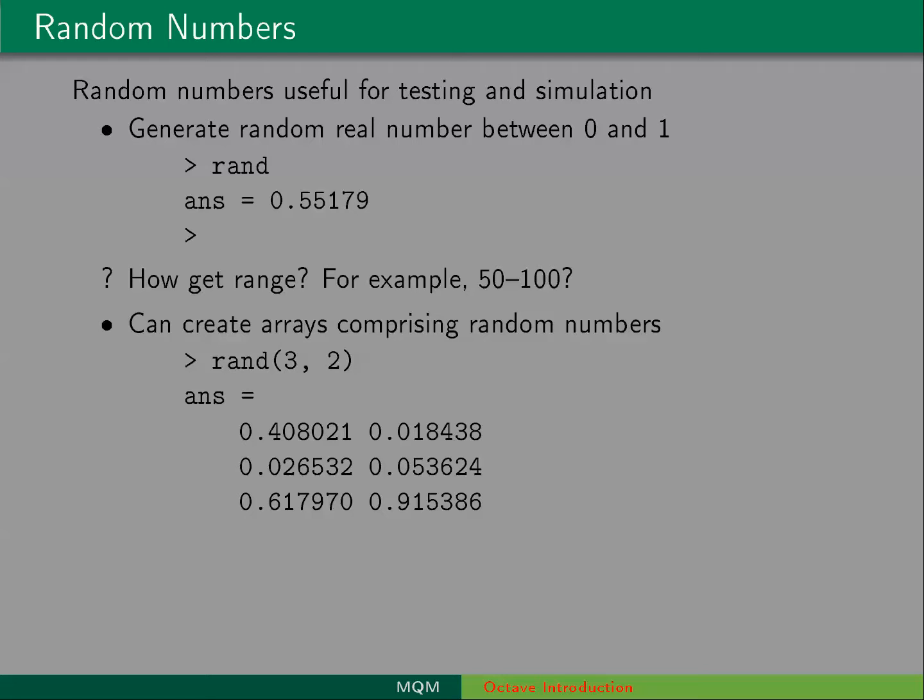You can also use the rand function to create arrays or matrices. So rand 3, 2 will give you a 3 by 2 matrix of random numbers from 0 to 1. And then another function, randi, gives you random integers. So in this example, we're generating random integers in the range from 1 to 5 and populating a 1 by 2 matrix with those. So the answer here, this time we ran it, would be 2 and 4. So we have a 1 by 2 matrix.